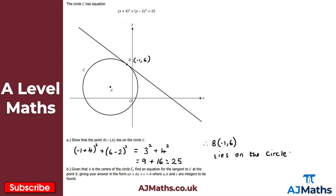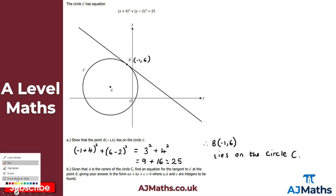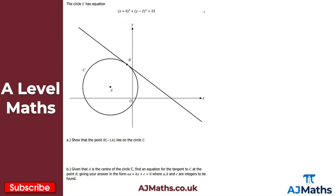That's all we need for part A. For part B, given that A is the center of circle C, we want to find an equation for the tangent to C at the point B, giving the answer in the form Ax plus By plus C equals zero, where A, B and C are integers. We don't need part A for part B, so let's look at part B.